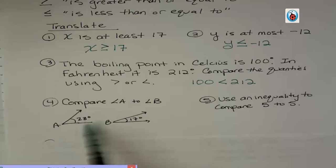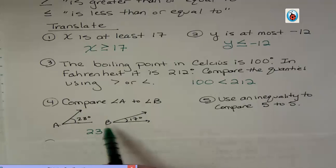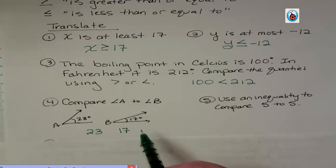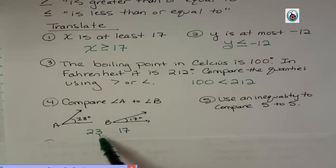Well, angle A is 23 degrees and angle B is 17 degrees. So when you're thinking about those two numbers, which number is greater? 23 is greater, so we point to the little guy.